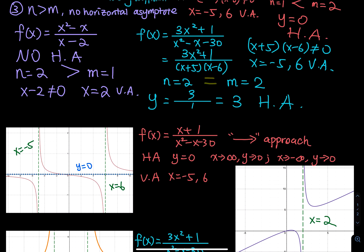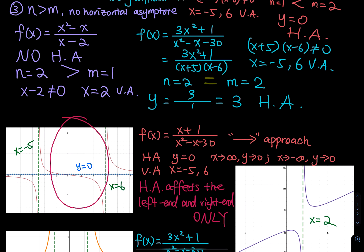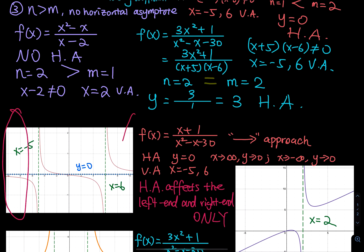The horizontal asymptote affects the left-hand and right-hand behavior only. Notice that the curve crosses the horizontal asymptote in the middle — and that is perfectly okay. For the horizontal asymptote, you look at the left-hand and right-hand ends. What happens in the middle doesn't matter, so the curve can cross the horizontal asymptote there.